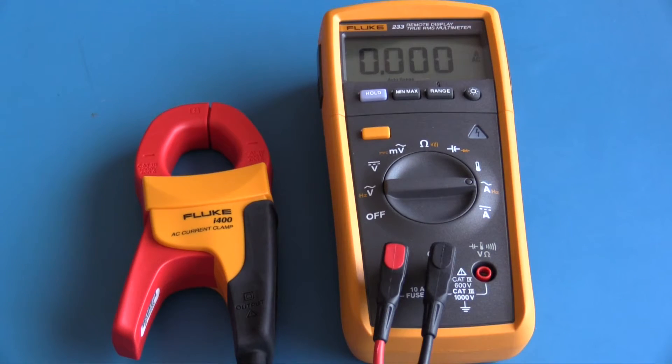I was going to demonstrate AC current measurement using the Fluke i400 AC current clamp. This current clamp provides a scaling of 1 milliamp per amp. With a 6 amp load, the Fluke 233 did not have the resolution necessary to make that measurement.